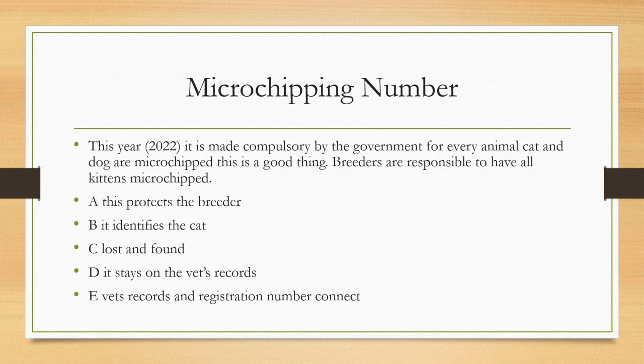We are now asked to vaccinate the kittens completely — the first vaccination and the second vaccination. On the first vaccination, get your microchip number done and put it on your registration when you register the kitten. This number stays with the cat for life and it is now compulsory in this country.